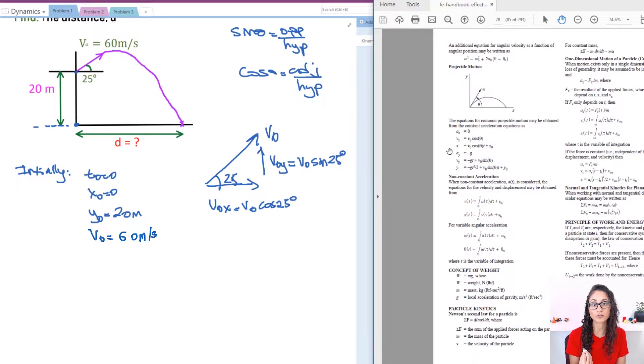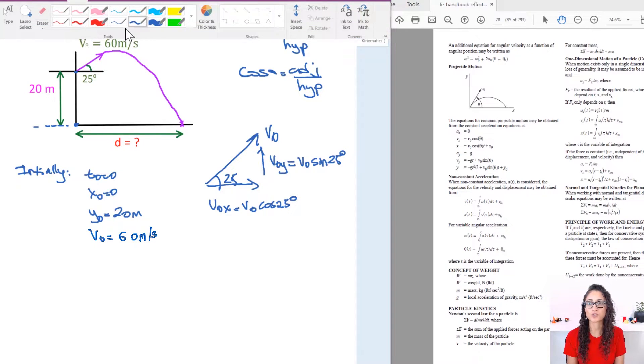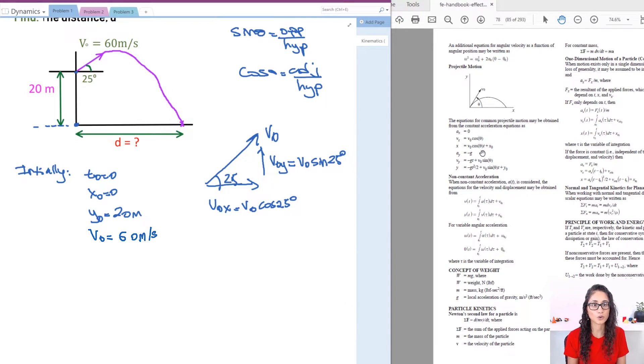So v0 is already converted here in these equations at v0x and v0y. It's already given to you like that in here. But I just wanted to demonstrate this for you guys just so you can understand where those equations are coming from. So let's write this equation first down.